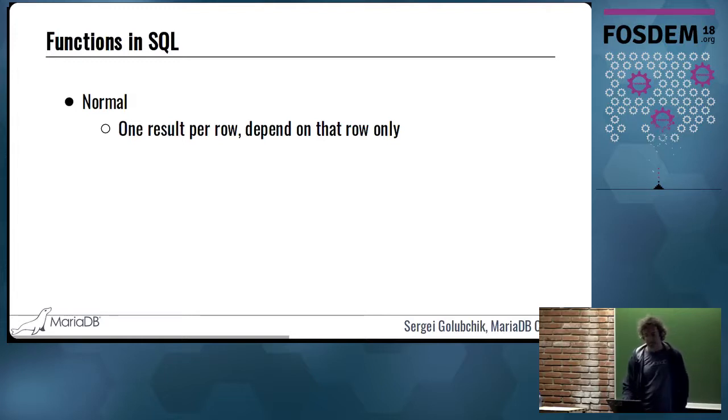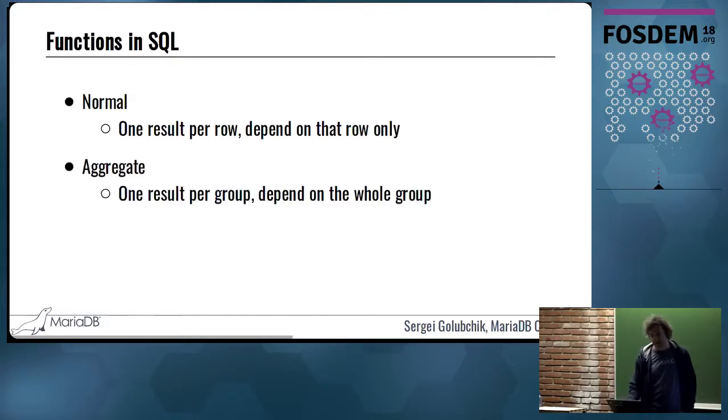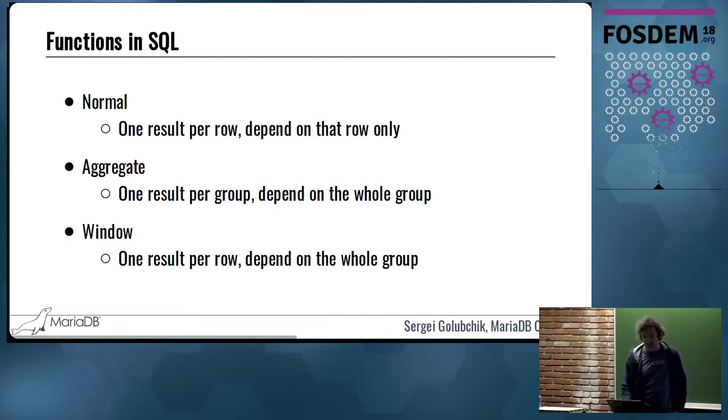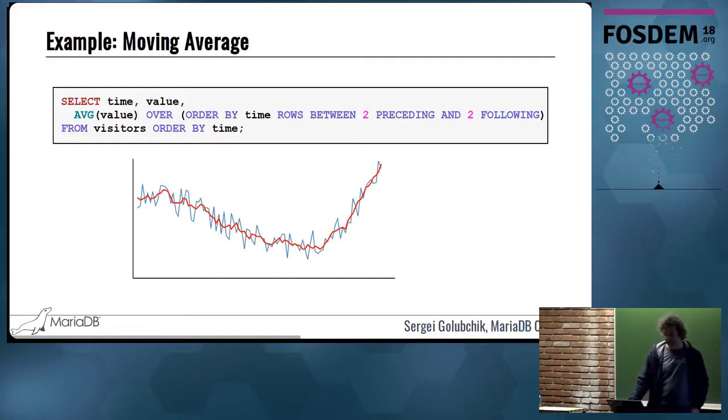There are normal functions. They are invoked one per row, and they deliver as many results as there are rows. If you select from a table with 10,000 rows and you use normal functions like CONCAT or MD5, then you'll have 10,000 results. There are aggregate functions. They're invoked one time per group, they deliver one result per group of rows, and the results depend on the whole group. So if you have 100 groups of 100 rows in each group, the normal function will deliver 10,000 results, while aggregate functions will have only 100 results.